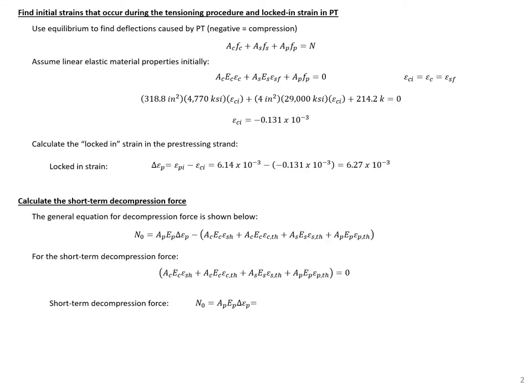We can find the initial strain caused by our post-tensioning using our equilibrium expression and linear elastic material assumptions. Initially we have no external applied axial load, so N is equal to zero. Plugging in all known values, we solve for the initial strain in the column to be negative 0.131. We then find the locked-in strain differential between the pre-stressing and the column — the initial pre-stressing strain minus the strain during post-tensioning — to be 6.27 times 10 to the negative third.